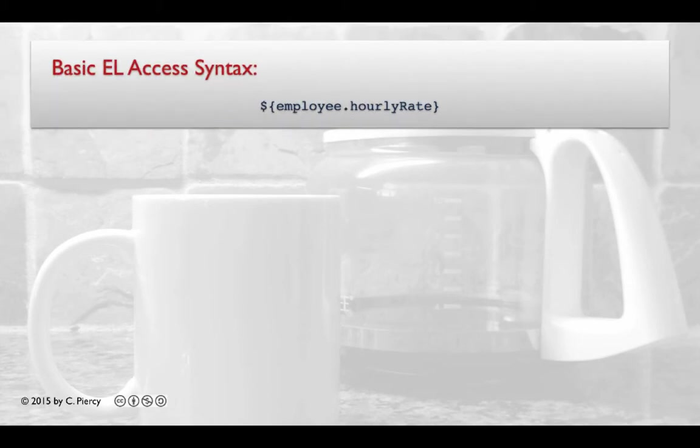Here's an example. Assume that we have a Java bean called employee. And that an employee will have a property called hourly rate. In this example, we are simply accessing the value of the hourly rate for the current employee Java bean.